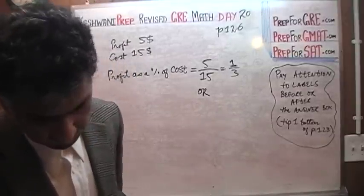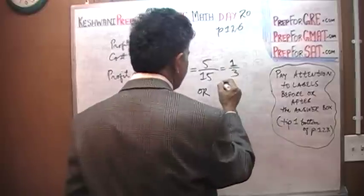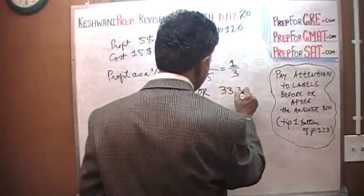You see, you have to read the question and see what exactly they are asking. What is the expected profit as a percentage? One-third as a percentage would be 33.33%.